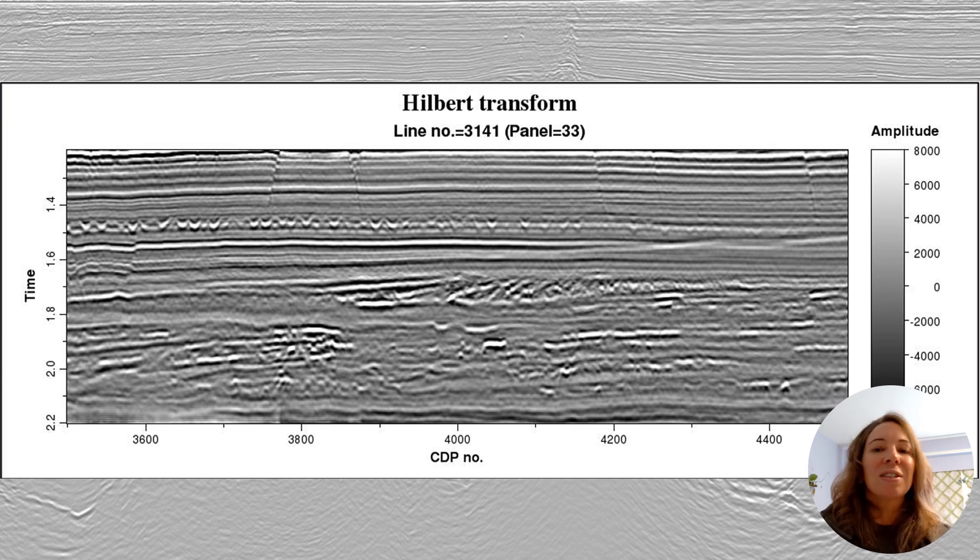At the heart of instantaneous attributes lies the Hilbert transform, shown here in this seismic data. It's a mathematical operation that creates a companion trace that's shifted 90 degrees in phase, adding a new dimension to our data.